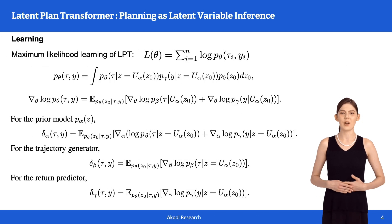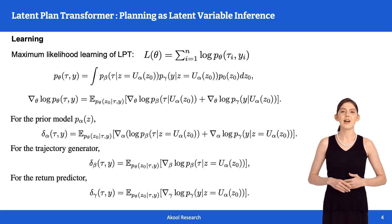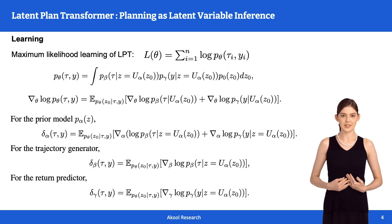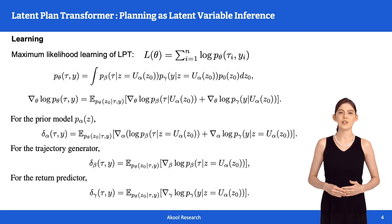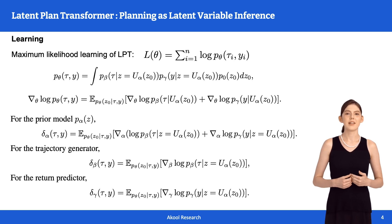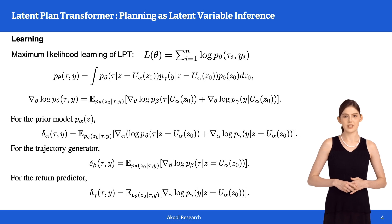Now let's talk about how we learn these models from observed data. The data we use consists of trajectory and return pairs. We use maximum likelihood estimation to learn from this data — MLE helps us find the parameters of our model that make the observed data most probable. We focus on the joint distribution of sequences consisting of states and actions, denoted as τ, and the final return, denoted as y. To optimize our model, we calculate the gradient of the log likelihood function with respect to each component: the prior model (δα), the trajectory generator model (δβ), and the return predictor model (δγ). A crucial part of this process is sampling from the posterior distribution P(Z | τ, y), which represents our updated belief about the latent variables given the observed data.